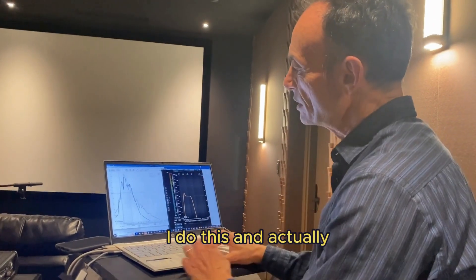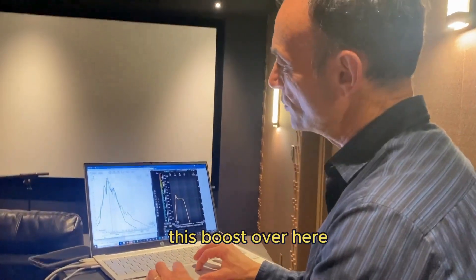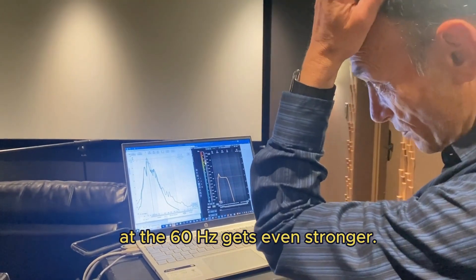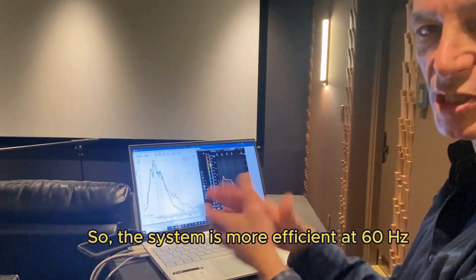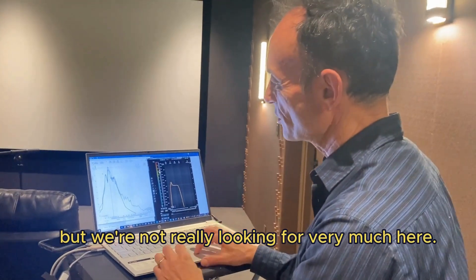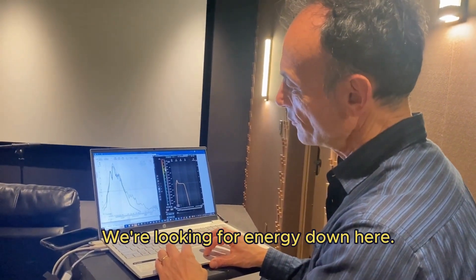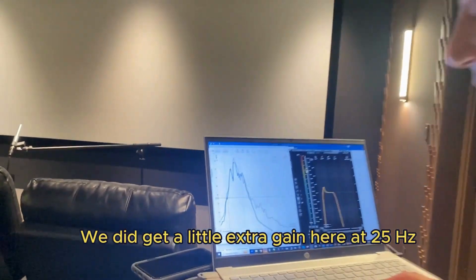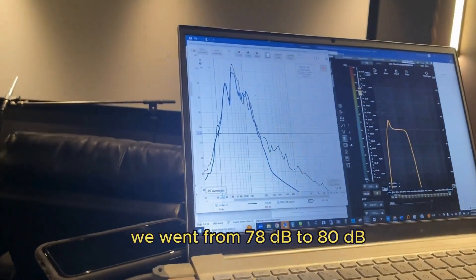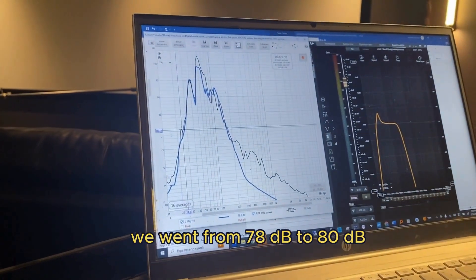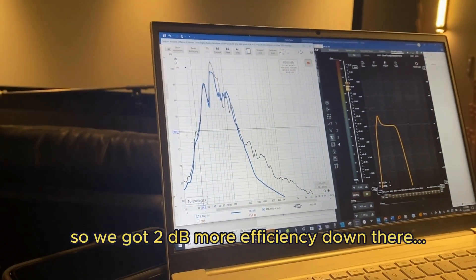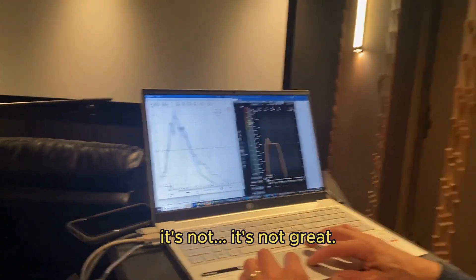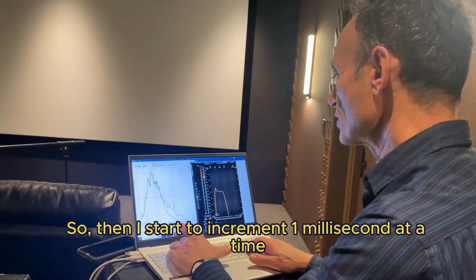In blue we have the four subwoofers without any particular tuning—no delay, no EQ, nothing. With four milliseconds, this boost at 60 hertz gets even stronger. The system is more efficient at 60 hertz, but we're looking for energy down here. We did get a little extra gain at 25 hertz—we went from 78 dB to 80 dB, so we got 2 dB more efficiency down there. It's not great.